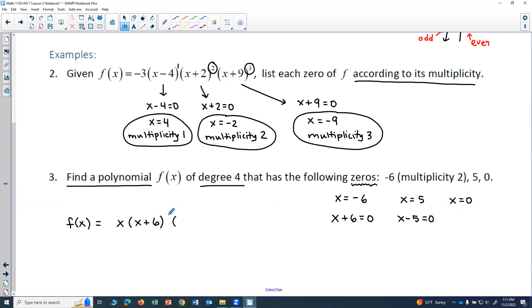And I will have, notice I'm leaving a little space there, I will have x minus 5 as my third factor.